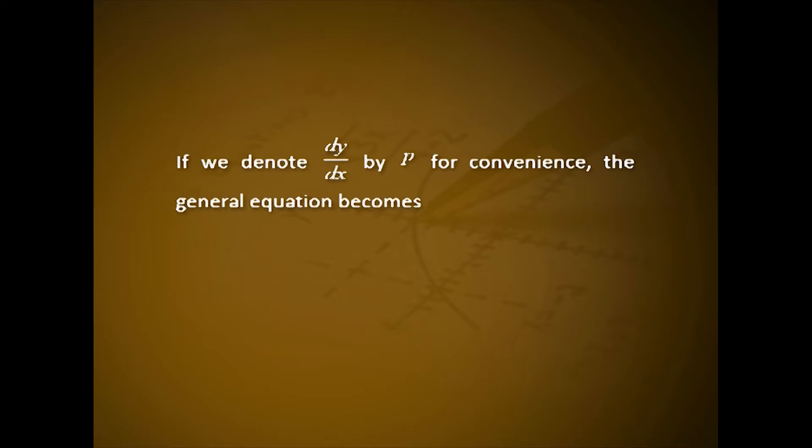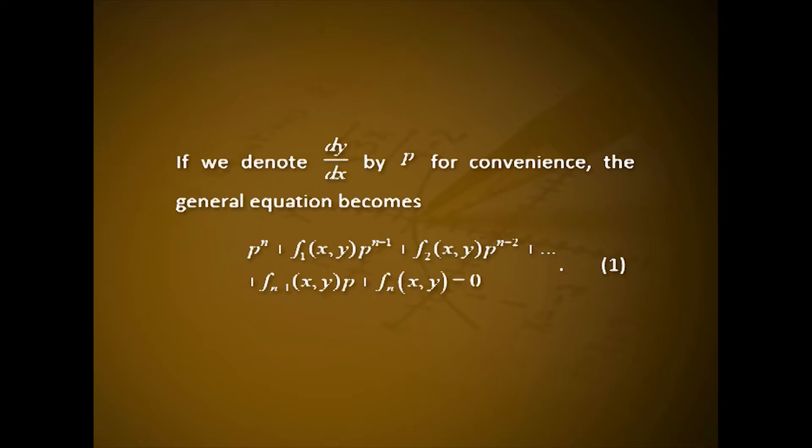The most general form of a differential equation of the first order but not of the first degree, say nth degree, is: (dy/dx)^n + f₁(x,y)·(dy/dx)^(n-1) + f₂(x,y)·(dy/dx)^(n-2) + ... + f_(n-1)(x,y)·(dy/dx) + f_n(x,y) = 0. If we denote dy/dx by p for convenience, the general equation becomes: p^n + f₁(x,y)·p^(n-1) + f₂(x,y)·p^(n-2) + ... + f_(n-1)(x,y)·p + f_n(x,y) = 0.